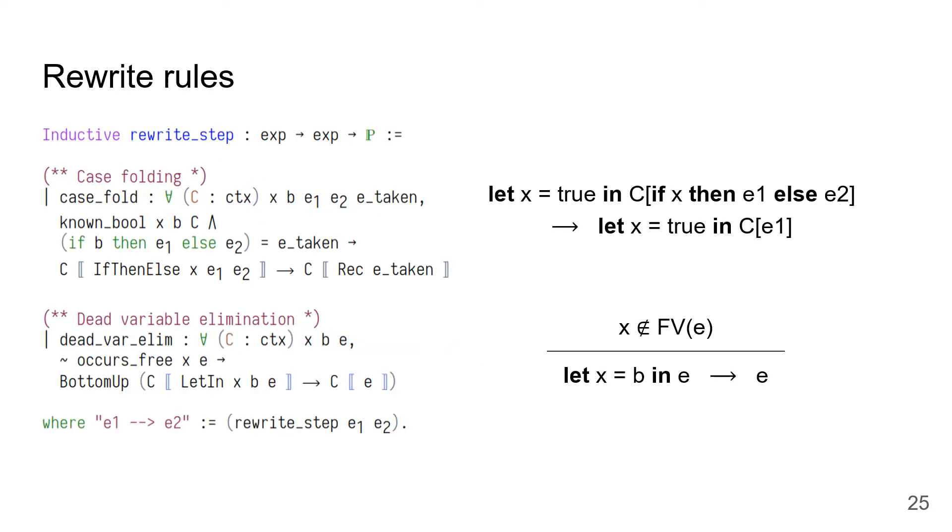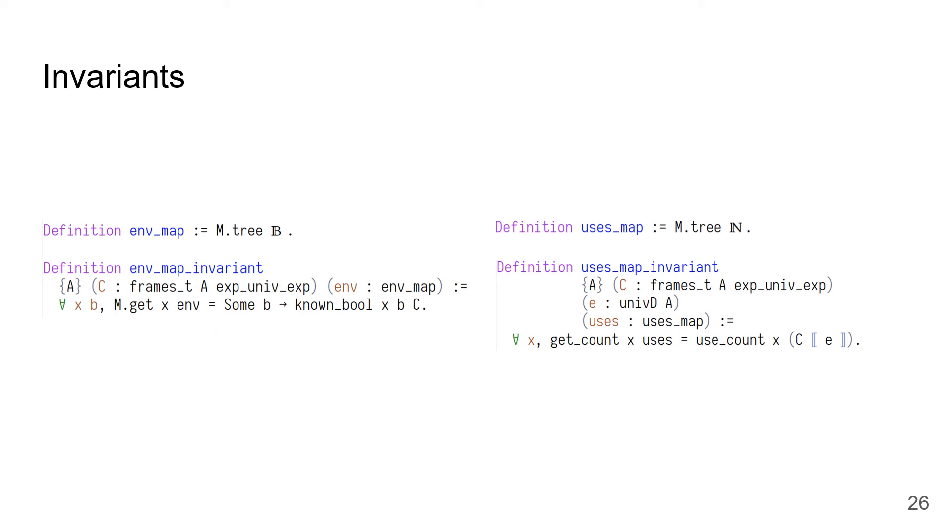Using these definitions, the user can then define the rewrite rules that they would like to implement, again in the usual way by defining a Coq inductive relation. In this case, I've chosen to call this relation rewrite step, and each constructor of rewrite step corresponds to a rewrite rule that I would like to implement. Next, the user defines the helper data structures that they would like to use, along with their invariants. Here, there are two helper data structures, an env map mapping variable names to Boolean literals, with the invariant that every key value pair corresponds to a known let binding in the context.